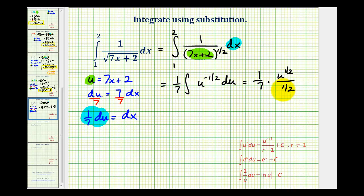Let's go ahead and clean this up and write it in terms of x. Instead of dividing by one-half, we can multiply by two. So we'll have two-sevenths. And then u is seven x plus two.